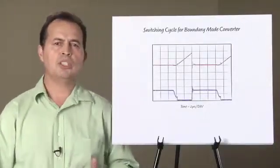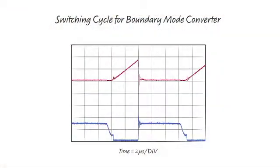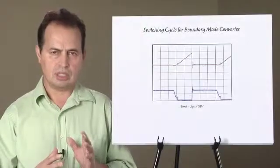This picture shows one switching cycle demonstrating boundary mode operation. The LT3798 senses when the secondary current has stopped flowing and turns the switch on just before the converter goes into discontinuous mode operation. This switching technique produces some efficiency gains.